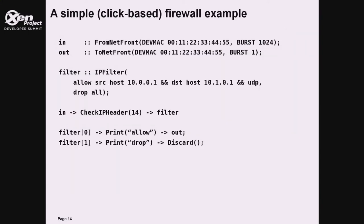On this slide you can see an example of a very simple firewall in Click. We receive packets from the net front element, going to the IP filter that allows only UDP packets with source 10.0.0.1 and destination 10.0.0.1. Packets that match these criteria are forwarded back to the net front element, otherwise dropped.